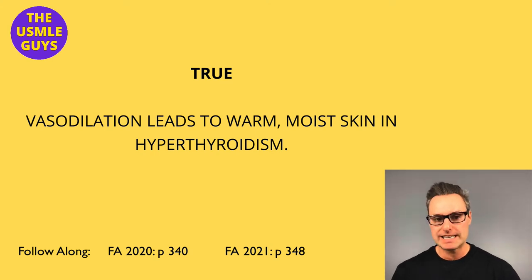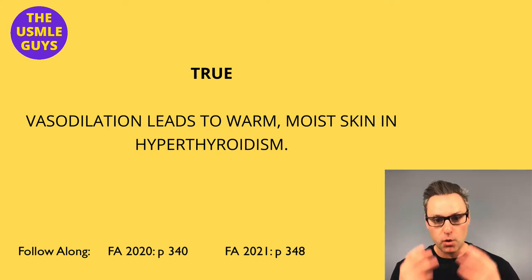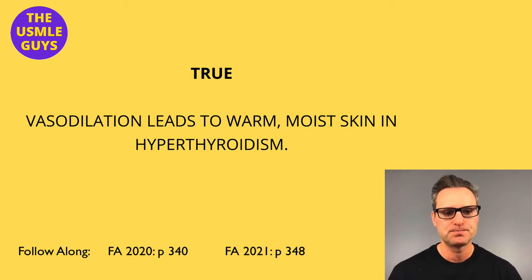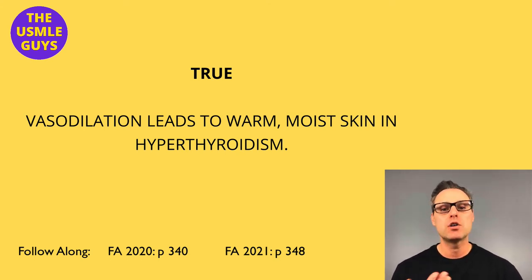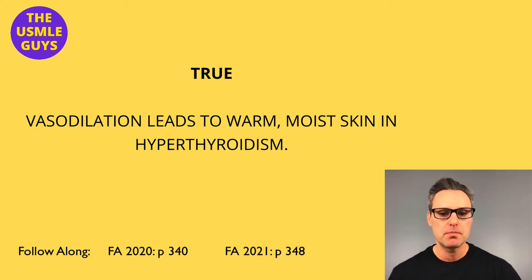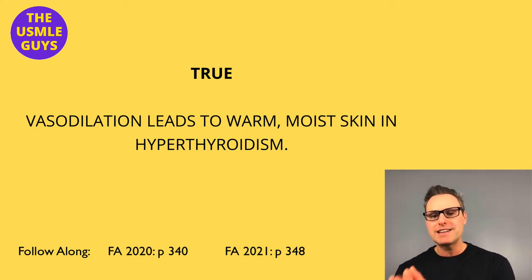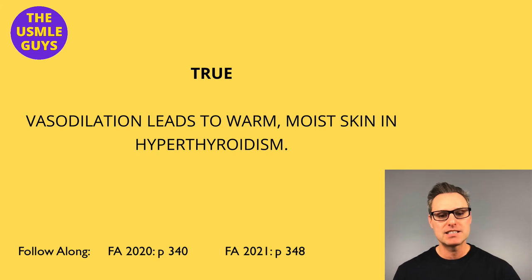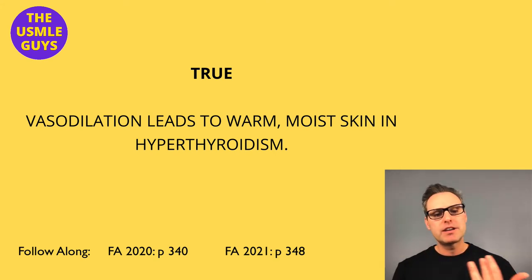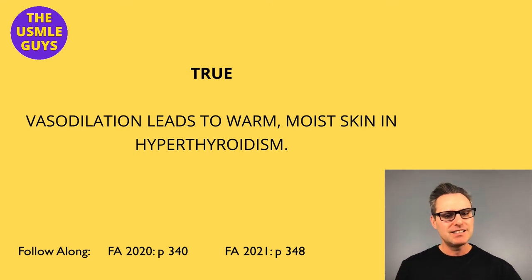Both can experience periorbital edema, but hyperthyroidism can also present with exophthalmos — the eyes bulging — and lid lag or retraction. In the musculoskeletal system, hypothyroidism is associated with hypothyroid myopathy: proximal muscle weakness and elevation in CK levels. It can also cause myoedema and carpal tunnel syndrome. Hyperthyroidism can cause thyrotoxic myopathy, which also presents with proximal muscle weakness, but unlike hypothyroidism, CK levels are normal.